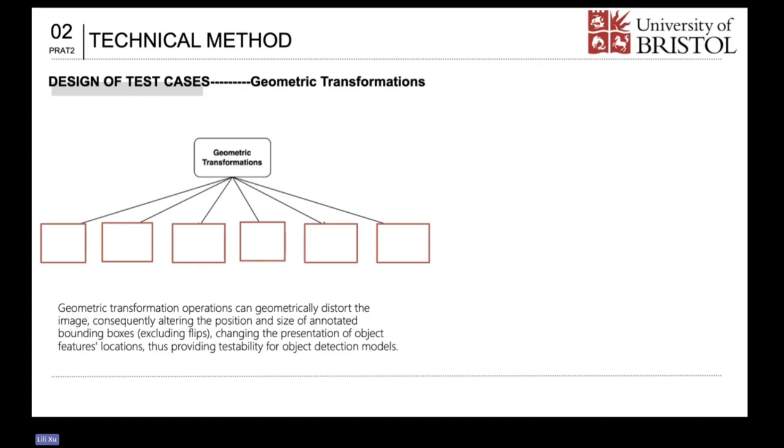Geometric transformation operations can geometrically distort the image, consequently altering the position and size of annotated bounding boxes, excluding flips, thus providing case stability for object detection models.